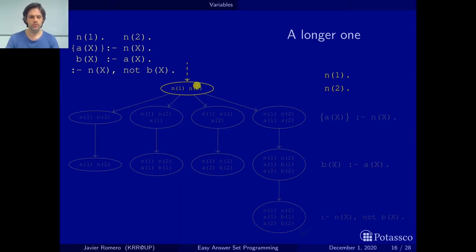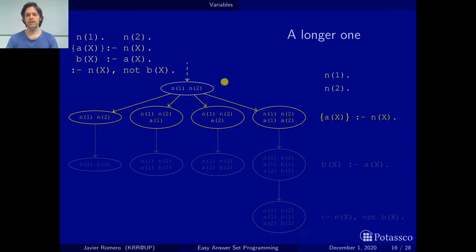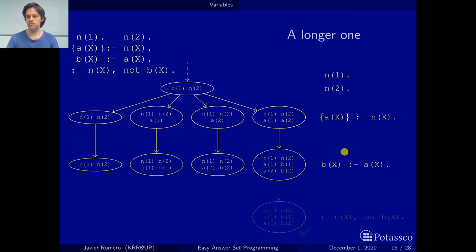Now we can only apply the choice rule, which says: for every x, if n(x) is in the set, we may choose to add a(x). It's different from before because now we have two cases. When x is 1, we have n(1), so the rule allows us to choose to add a(1). When x is 2, we have n(2), so we may choose a(2). Putting these together gives us four options: choose nothing, choose a1, choose a2, or choose both.